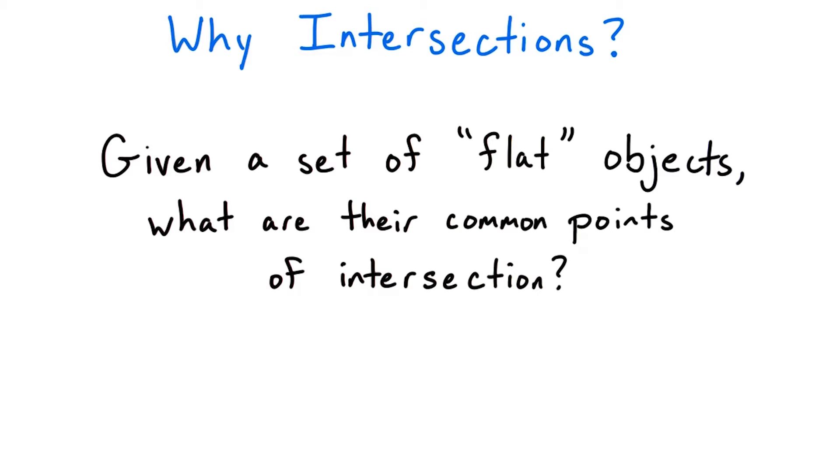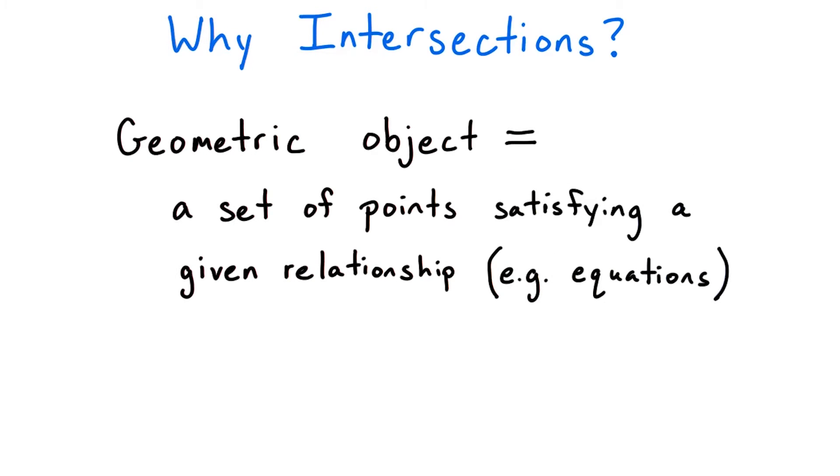In the abstract, it isn't immediately obvious why this problem has much interest outside of pure mathematics. How do the intersections of lines and planes come up in real life? Geometric objects are often defined to be sets of points whose coordinates satisfy a particular relationship, like an equation.